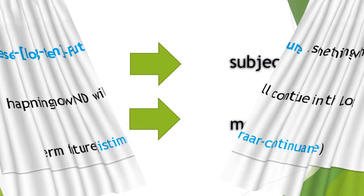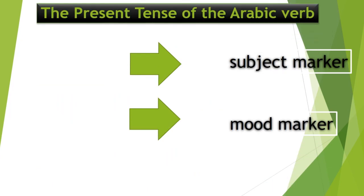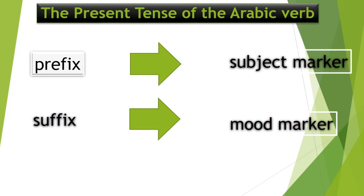The present tense of the Arabic verb requires that you prefix the subject marker and suffix the mood marker to the stem of the verb. However, it is not as easy as it sounds, especially for Form 1. The words you need to add are going to be a little bit challenging.